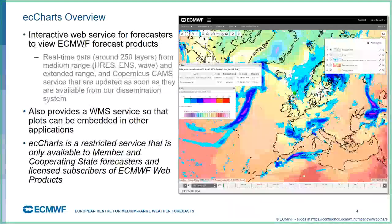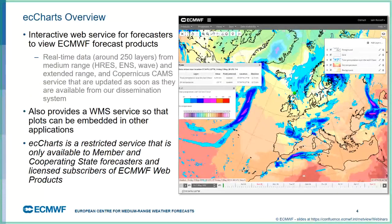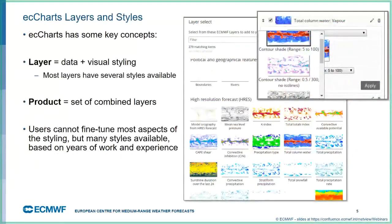EC Charts is designed for forecasters in particular. It shows our recent forecast products, and in addition to the web browser version it also has a WMS — web map service — which means you can embed its plots inside other applications that are WMS clients. The important thing is that EC Charts is not available to everyone; it has restrictions and is for our member and cooperating states, forecasters, and licensed subscribers. But since we can share some of these nice graphical products with Metview, it's worth mentioning what EC Charts gives us.